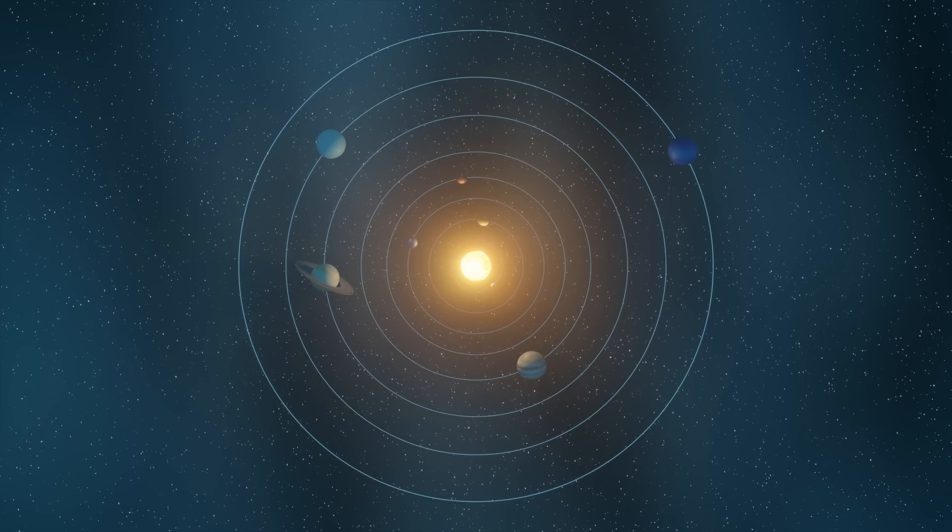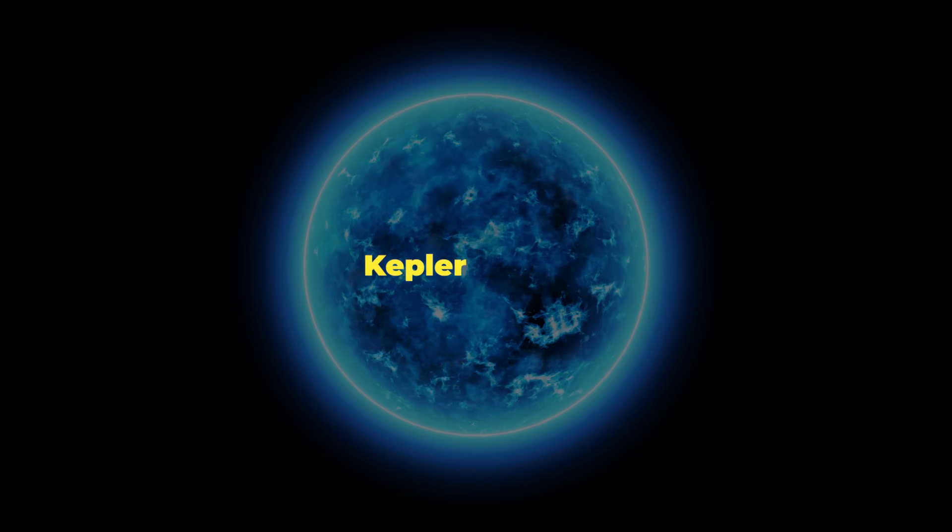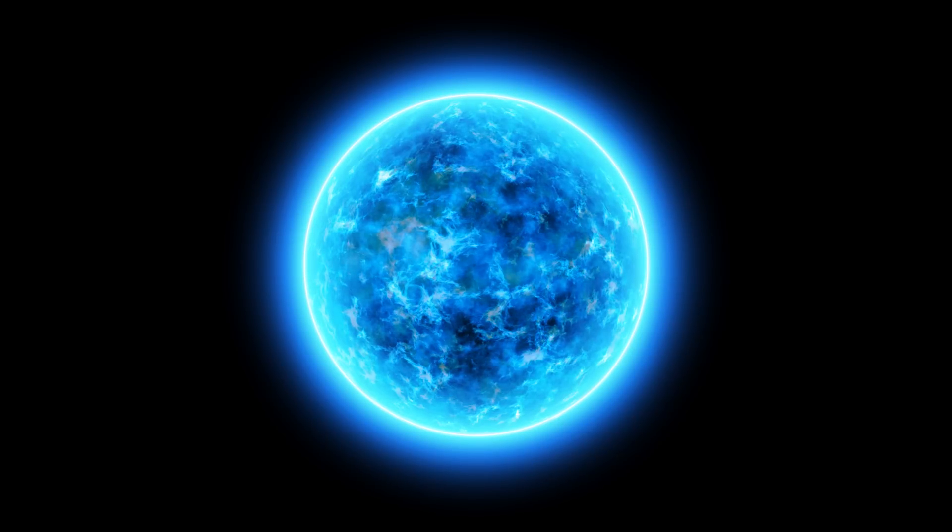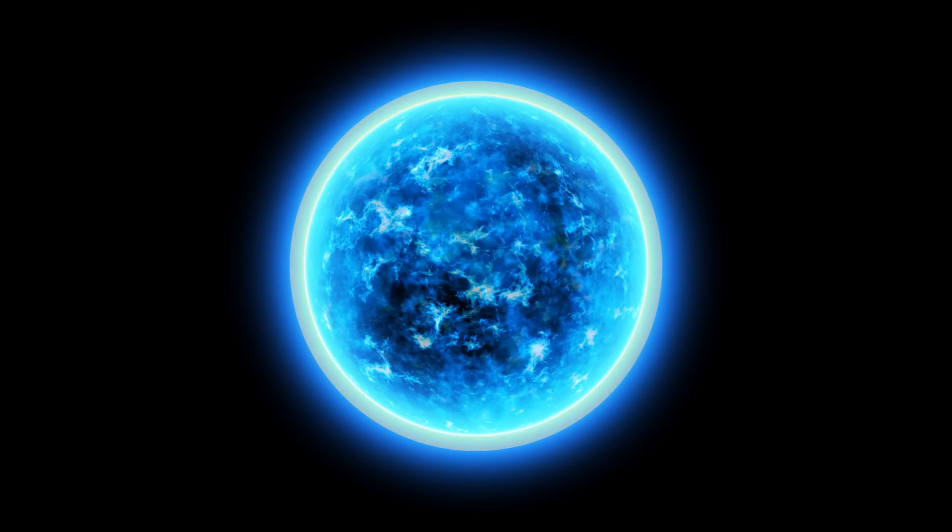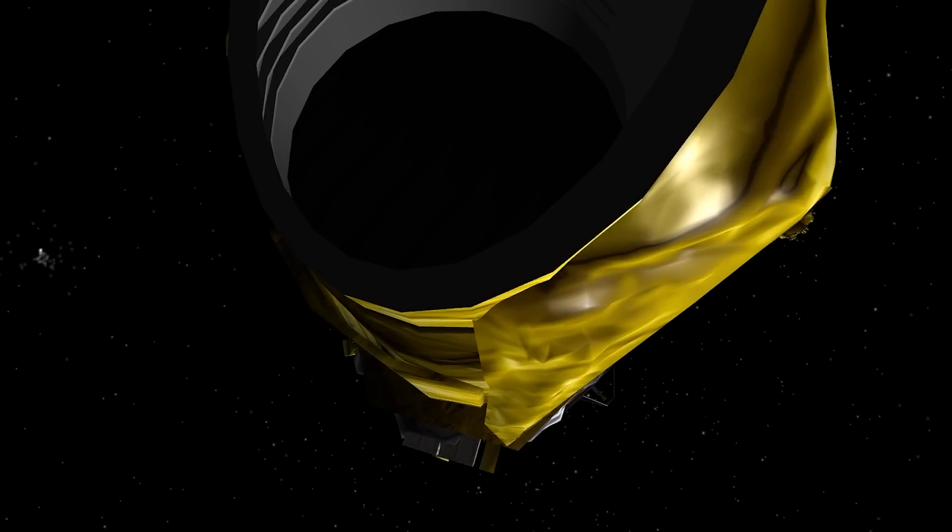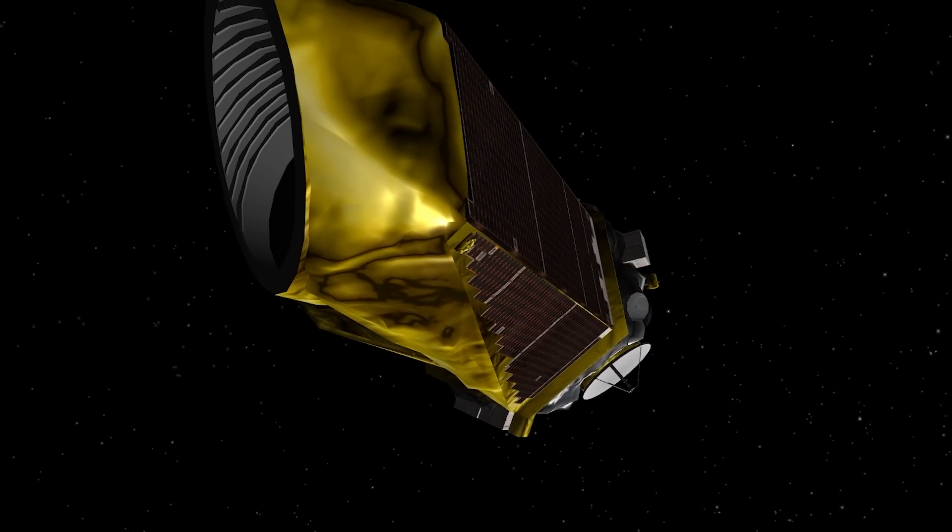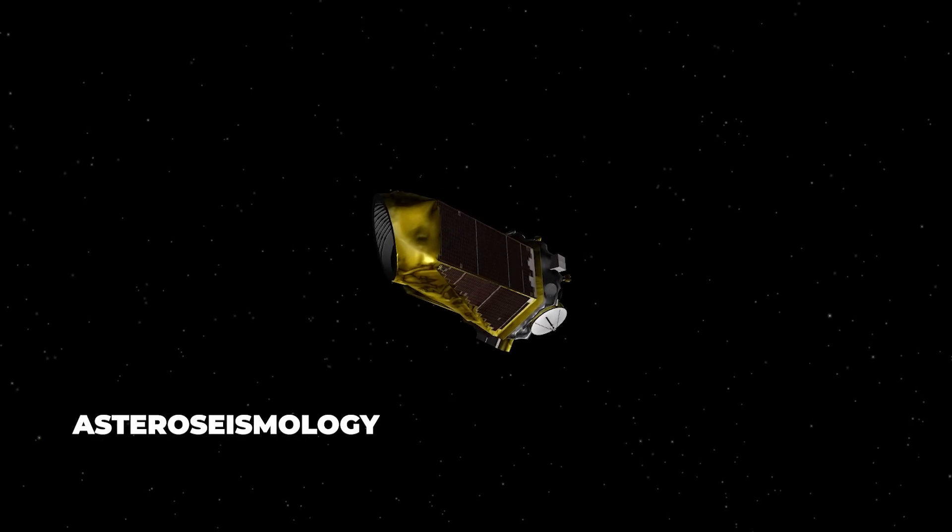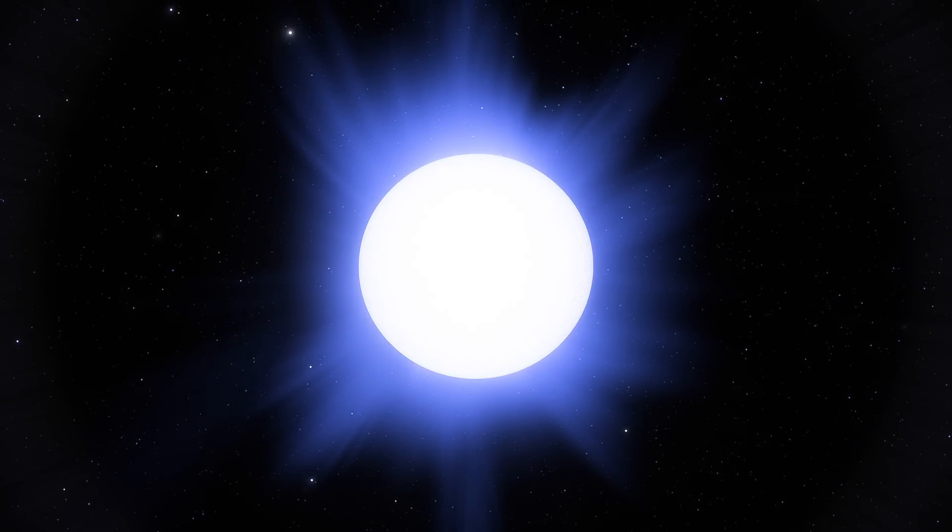But here's something that might blow your mind. Meet Kepler-11145-123, a star that's the most spherical natural object we've ever discovered. Scientists measured its shape using a technique called astroseismology. Basically, they listen to the star's vibrations, like cosmic music.